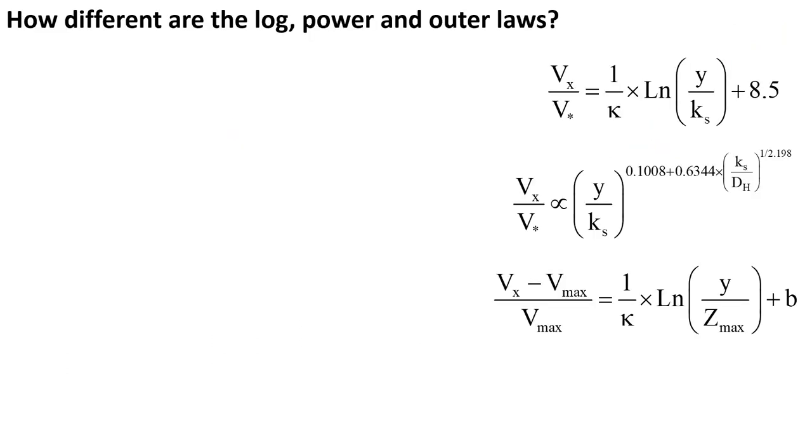Altogether, we can find in the literature three different types of velocity distribution: a logarithmic law, a power law, and an outer law, shown all on the right.